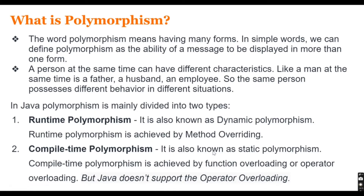The other type is compile-time polymorphism, also known as static polymorphism. It is achieved by function overloading or operator overloading. However, Java doesn't support operator overloading, so compile-time polymorphism in Java is achieved only with function overloading, also known as method overloading. So to summarize: runtime polymorphism is achieved by method overriding, and compile-time polymorphism is achieved by method overloading.